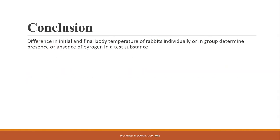In conclusion, differences in initial and final body temperature of rabbits, individually or as a group, determine the presence or absence of pyrogens in test substances. We will now complete this practical with the help of software.